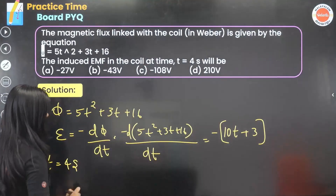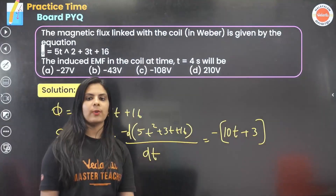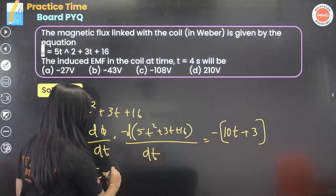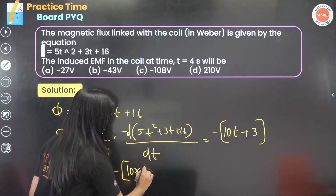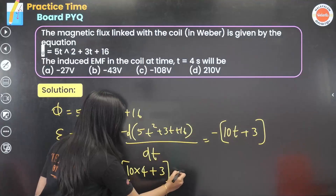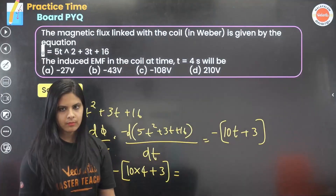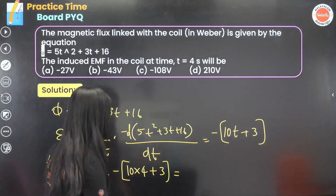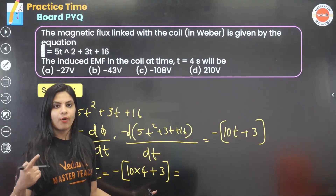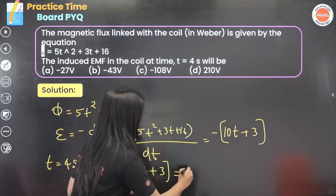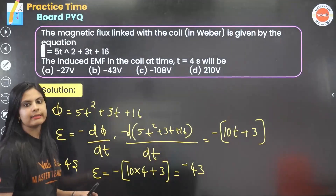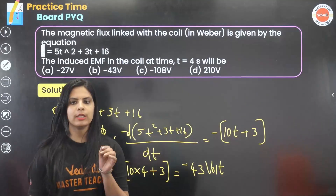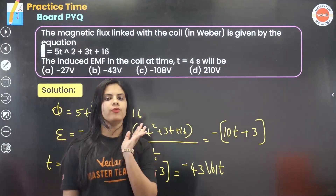At t = 4 seconds, the induced EMF equals minus of (10 × 4 + 3) = minus(40 + 3) = minus 43 volts. So the induced EMF is equal to minus 43 volts.